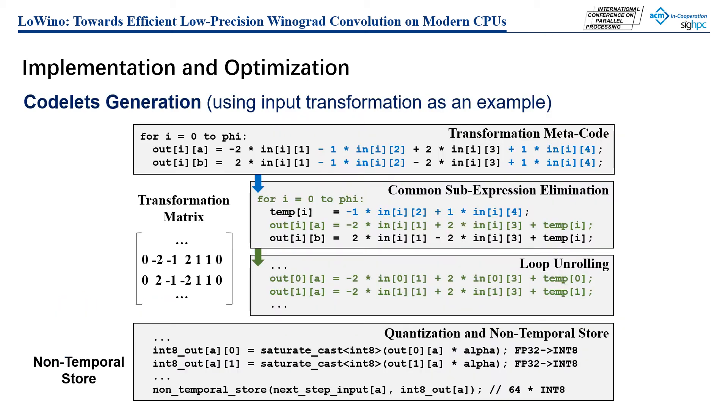For transformation steps, we write a code light generator. It automatically generates high-performance codes by utilizing optimization techniques such as loop unrolling. We combine the quantization and dequantization with the transformation step to overlap computation with memory operations. In addition, we apply non-temporal stores to write data in memory directly without fetching data to cache first. This is because the transformed data for each tile will not be used in the near future.